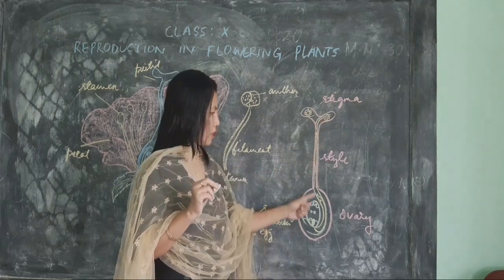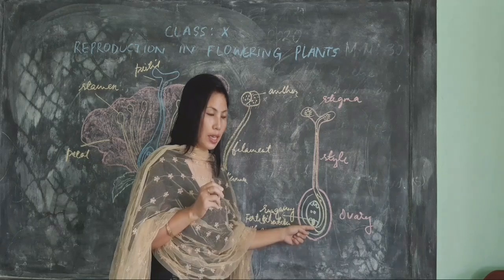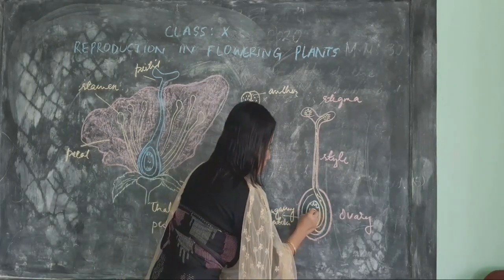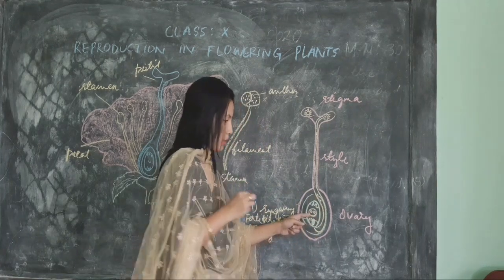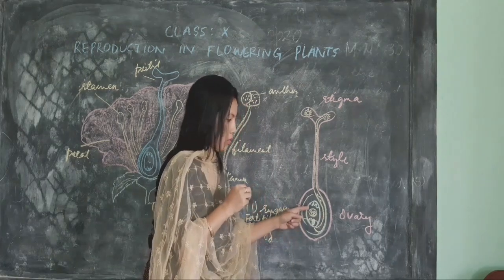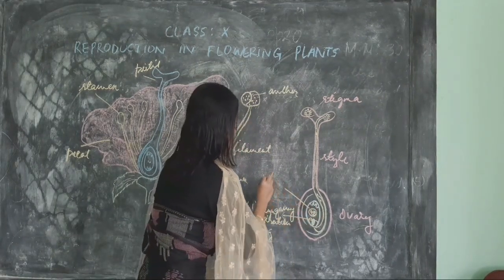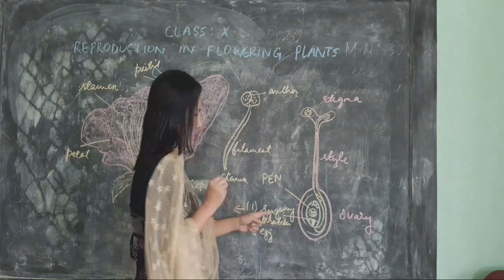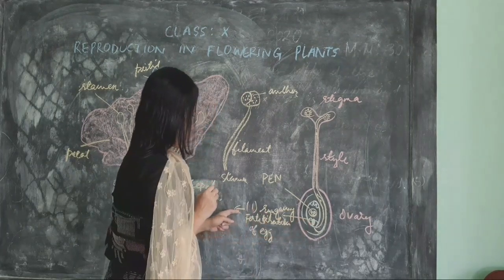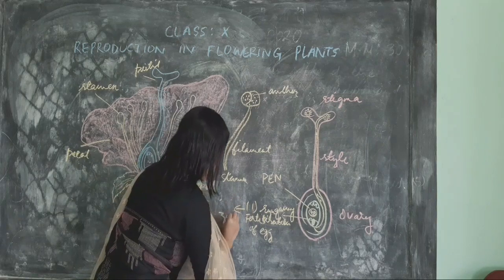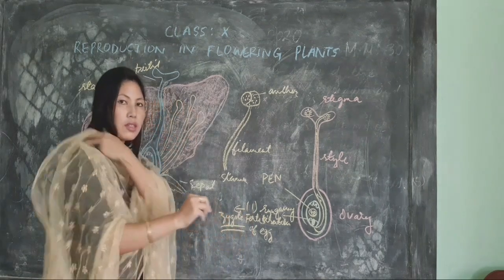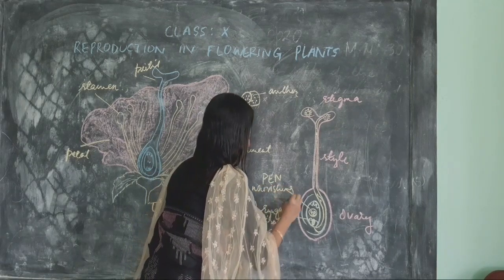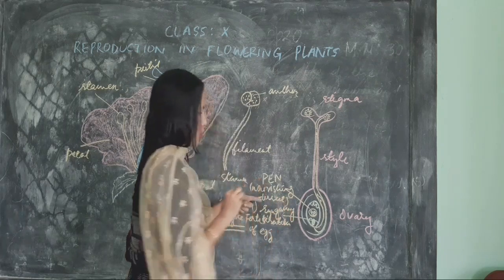As the pollen tube discharges two male gametes, one male gamete will fertilize the egg — the process called syngamy — and the other male gamete will fertilize the polar nuclei. As a result, three haploid cells are fused, resulting in the production of the Primary Endosperm Nucleus (PEN). Syngamy produces the zygote, which is the future plant, while the PEN is a nourishing tissue that nourishes the growing zygote.